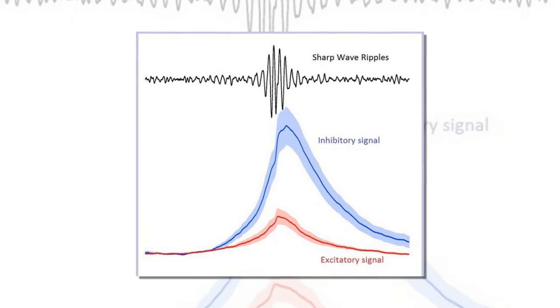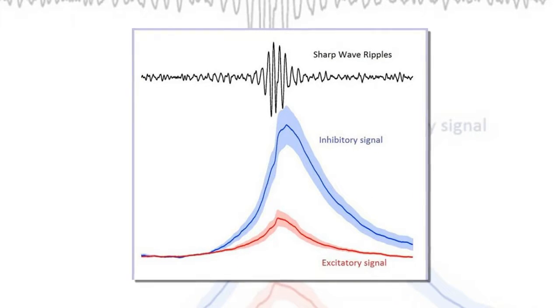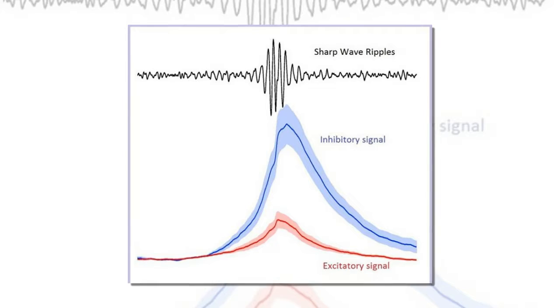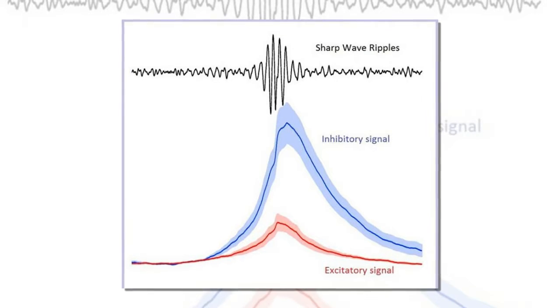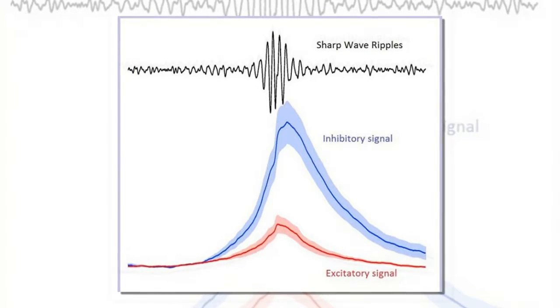These waves were named after the characteristics experts observed while measuring them. There are slow sharp waves with a triangular shape with ripples or fast field oscillations.